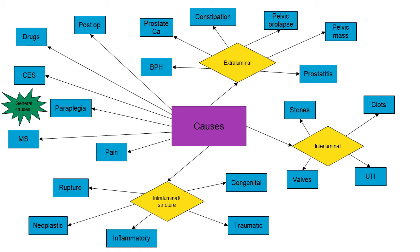We have on this diagram an overview of different causes for retention. We have the general causes over on the left hand side, including cauda equina syndrome, paraplegia, multiple sclerosis, post-operative causes, drugs, etc. We also have the intraluminal causes, also known as strictures, where there is a narrowing caused by something within the actual tubing of the urinary system. Then we have the interluminal where there is something blocking inside the tubing, and the extraluminal where something is pressing on the tubing. We will go through these over the next few slides.